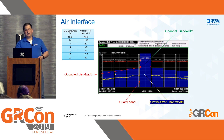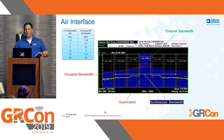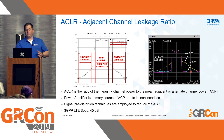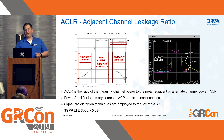Even though the signal we're sending out is still within our occupied bandwidth, when talking about ACLR — adjacent channel leakage ratio — we're measuring how much energy is in the adjacent channel. Here you can see without DPD and with DPD: 45 dB improvement makes sense because it's the difference between the peak in the main channel and the peak in the adjacent channel, measured in dB.